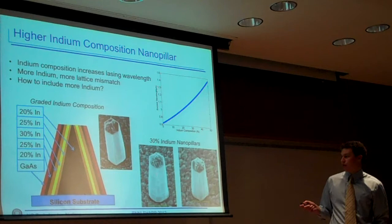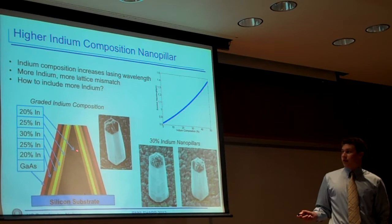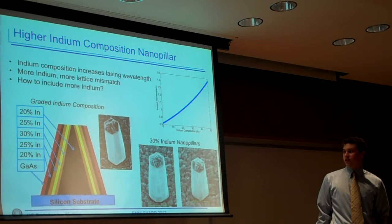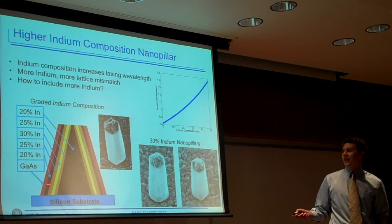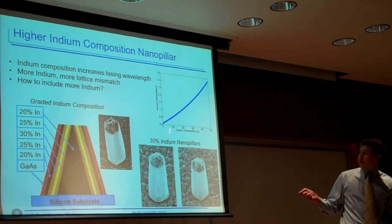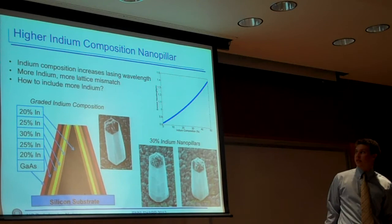What we did instead is we did a graded indium composition, which we put in the indium in layers of differing percentages. We have the 20, 25, 30, 35, or 25, 20, and then the gallium arsenide layer, on top of the silicon substrate. As you can see here, we want an area of around 30% indium for 1.1 microns of wavelength. We increased that, and now I'm going to talk about photoluminescence.